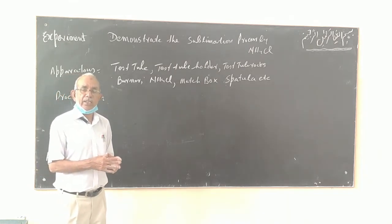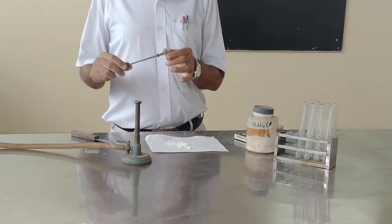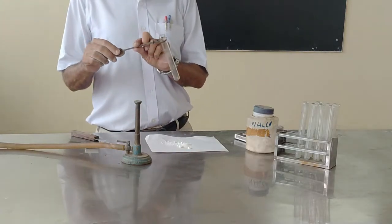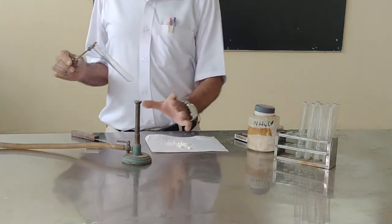Now the procedure is as follows. Here is the test tube, test tube holder, test tube rack, this is ammonium chloride, and burner.